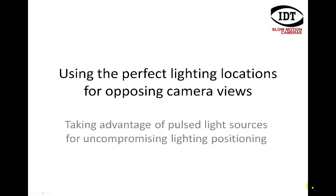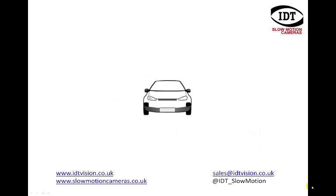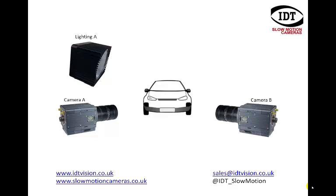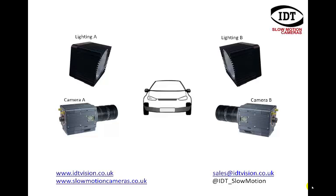Hi and welcome to this tutorial on setting up the hardware and software to capitalise on the pulsing of LED lights for controlling which cameras benefit from which lights. Let's say that we're imaging this car using a camera and lighting on the left hand side. When we introduce a camera and lighting on the right hand side looking in the opposite direction, we may well experience the opposing light shining directly into the camera lens.